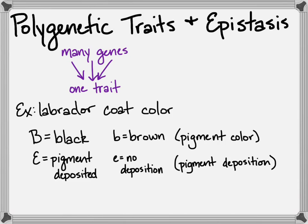So it doesn't matter if you have dominant b's or lowercase b's, as long as you have two recessive e's for that one gene, the e gene, the pigment deposition gene, you're going to have a yellow lab.